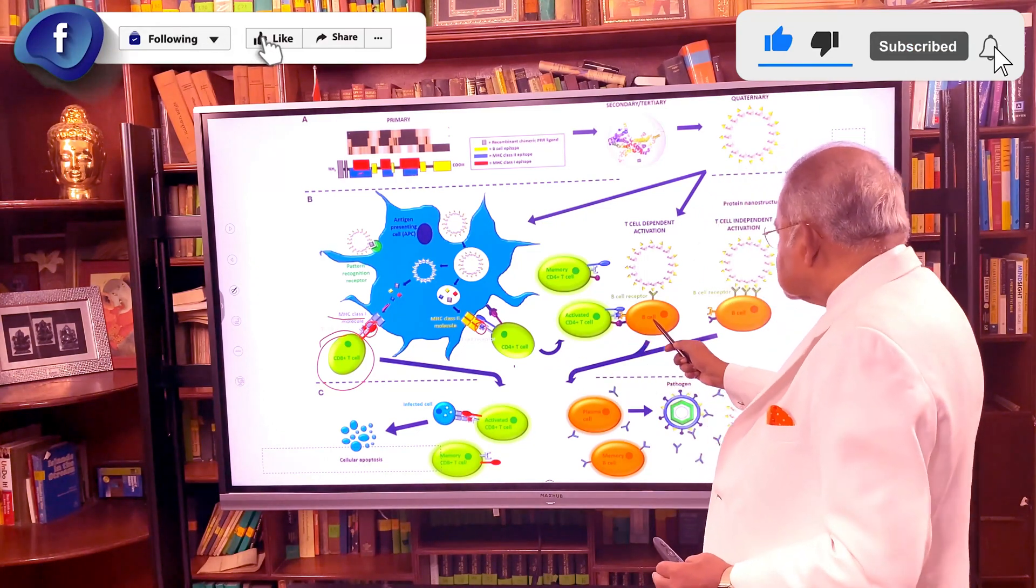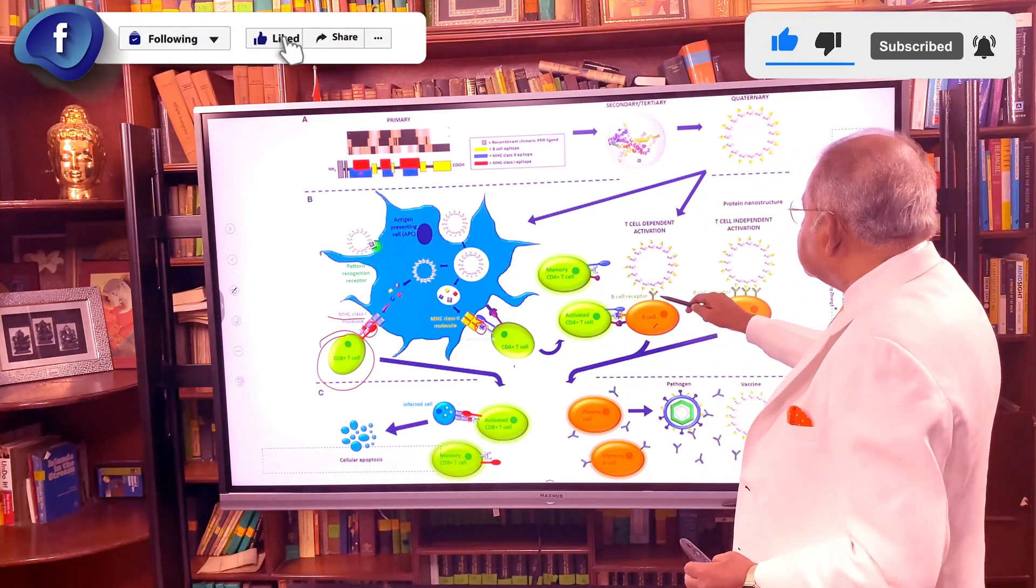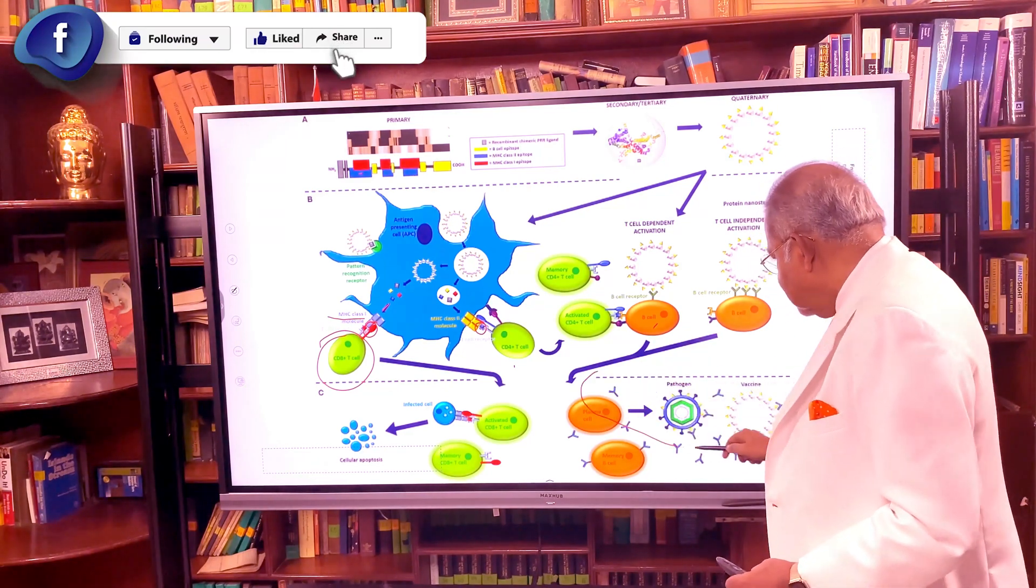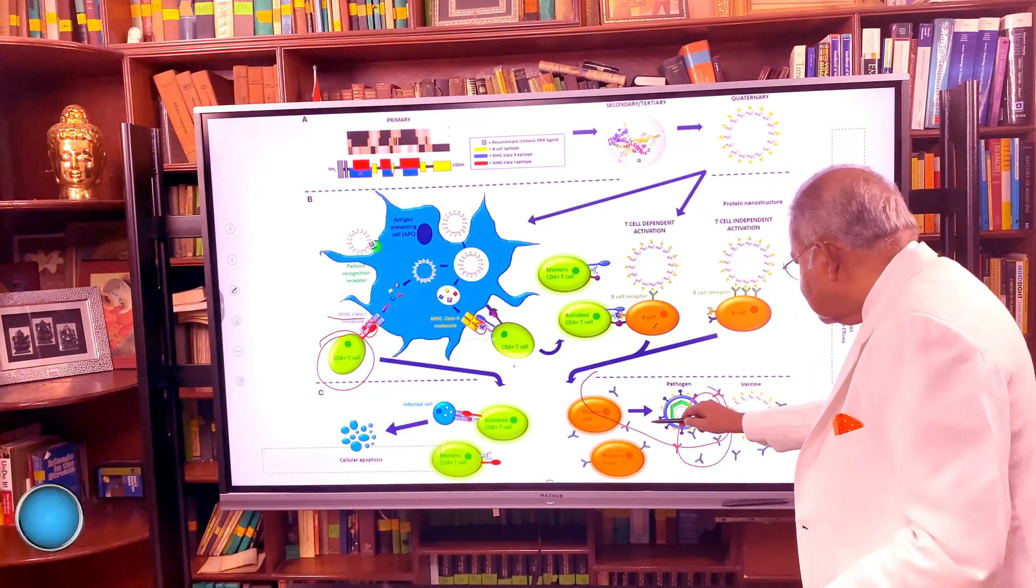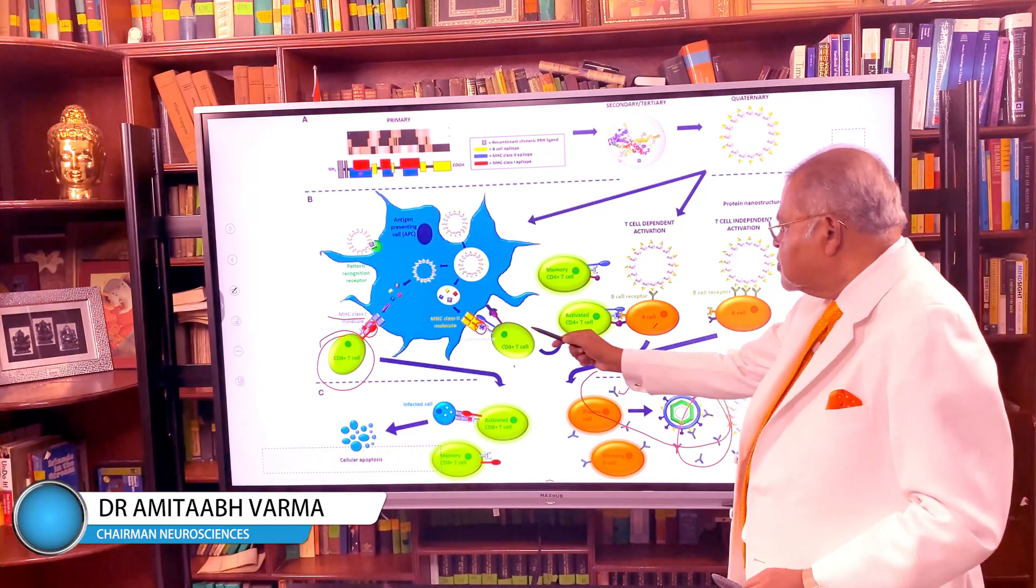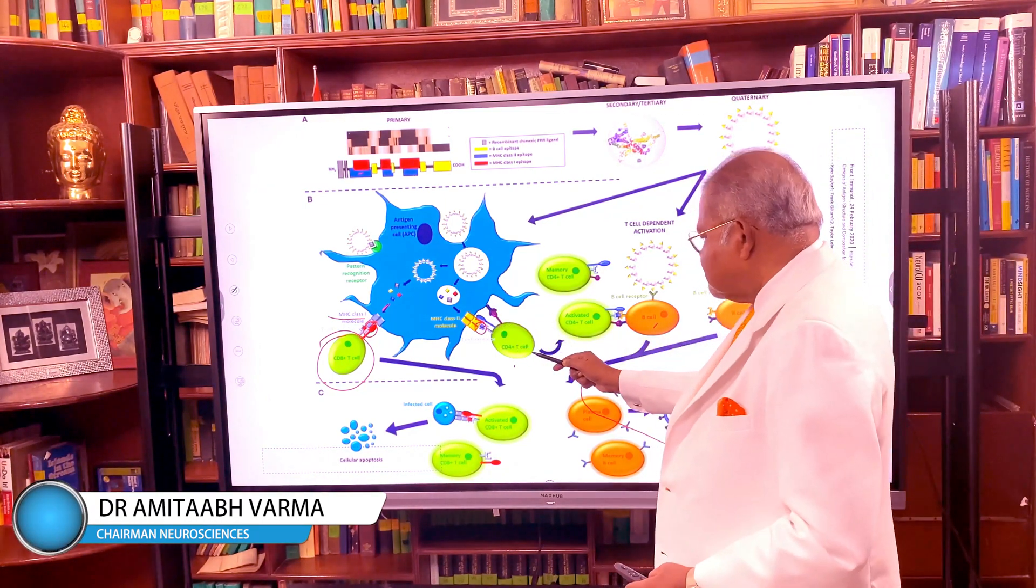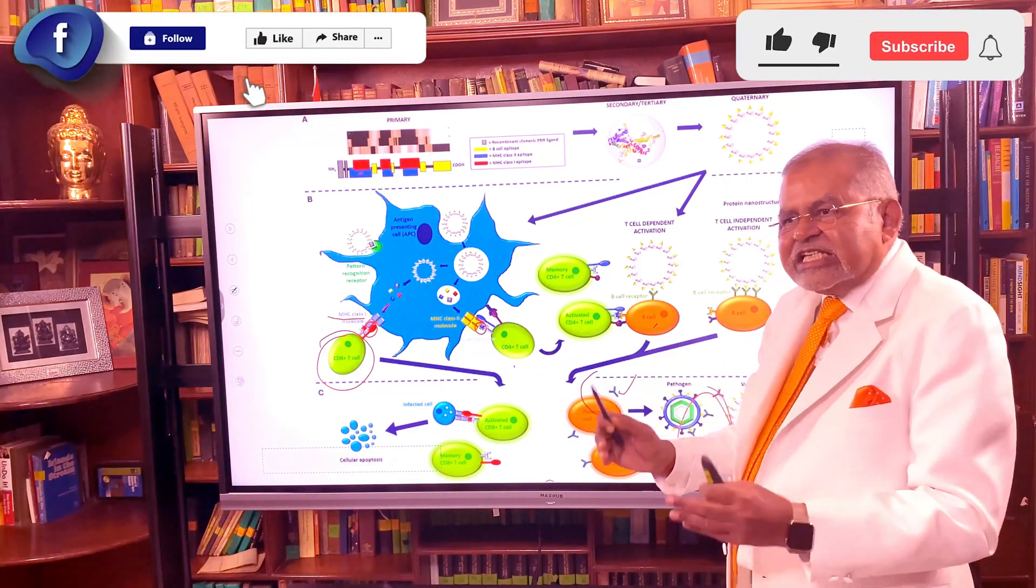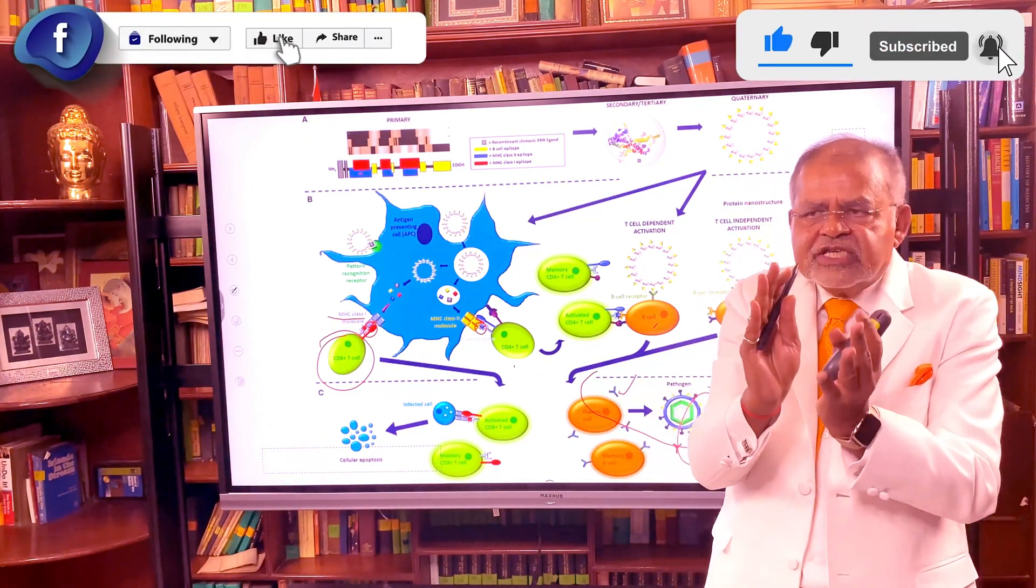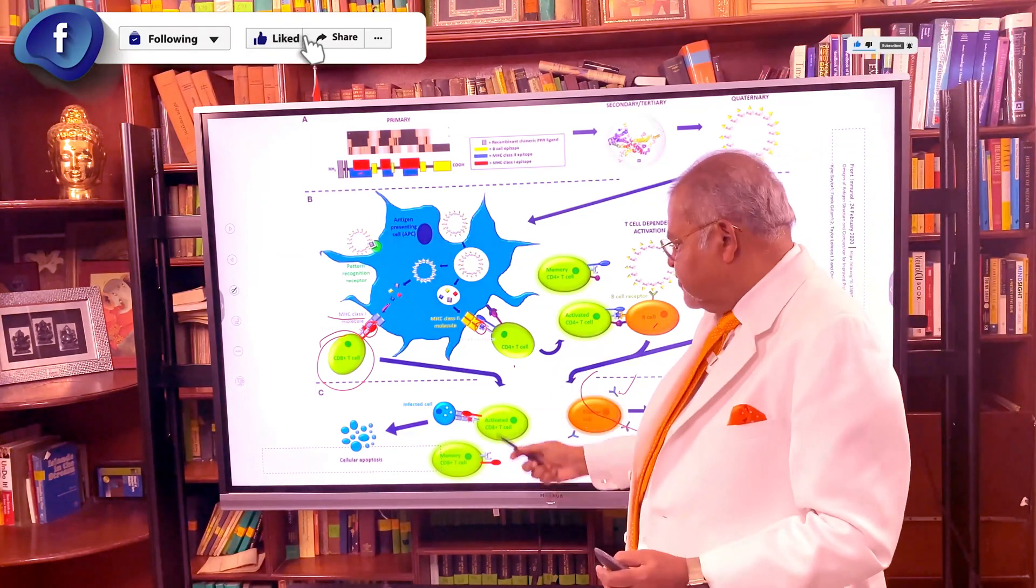And B cells produce the antibodies. These are all antibodies. They are all produced through these blue-colored cells picked up by T cells which are CD4. CD4 means they have a special receiver to receive them.